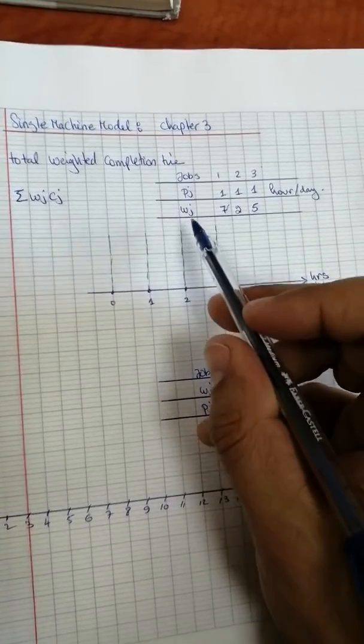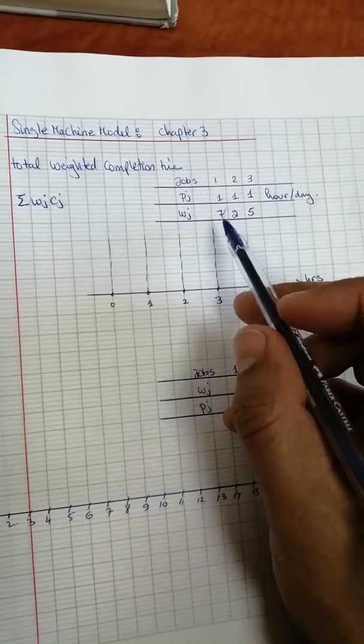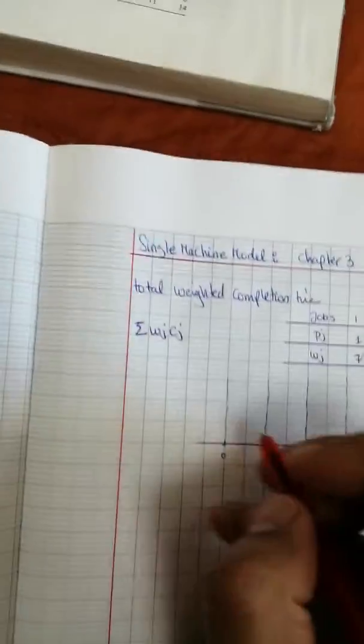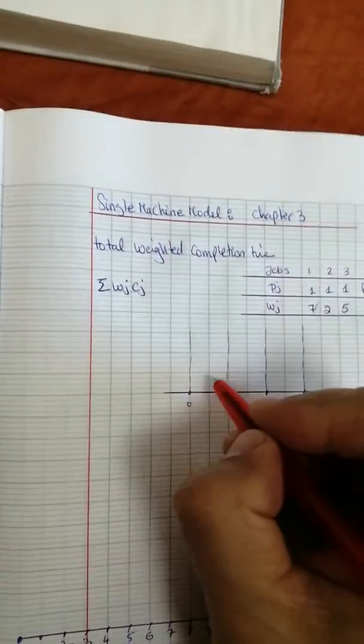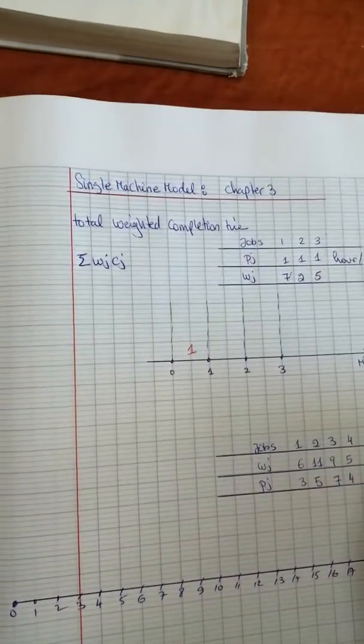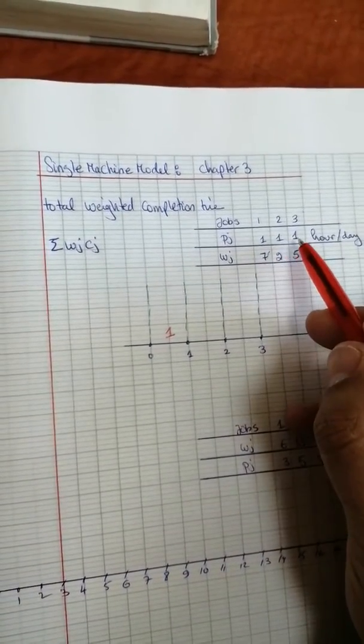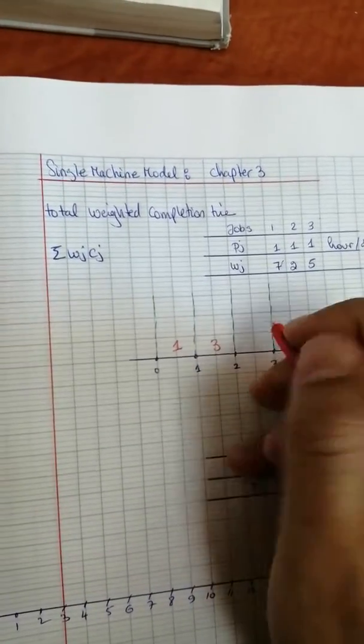Since all the jobs have the same processing time and we have the weights in dollars, we start with the highest weight. So we start with job 1, which requires one hour, and then we do job 3 as it has the next highest weight, and then job 2. So the best sequence is 1-3-2.